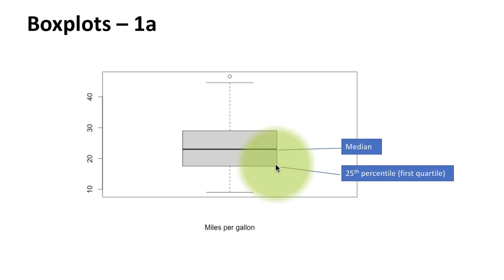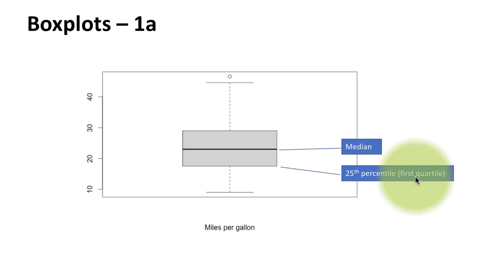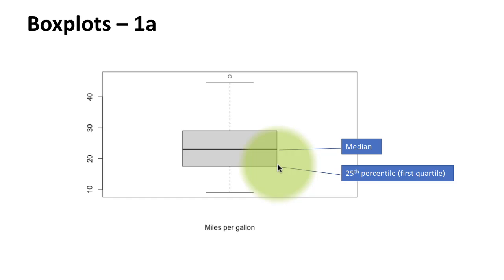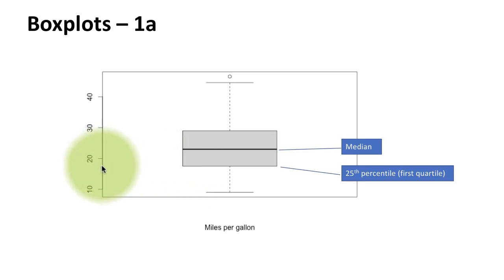The lower end of the box represents the value at the 25th percentile, also called the first quartile. In other words, if values are sorted in ascending order, one quarter of the values will lie below that particular value. So if there were 100 values, the 25th value would be here; if there were 500 values, the 125th value would be there. In this case, it looks like this falls at about 17, which means 25 percent of the values are below 17.